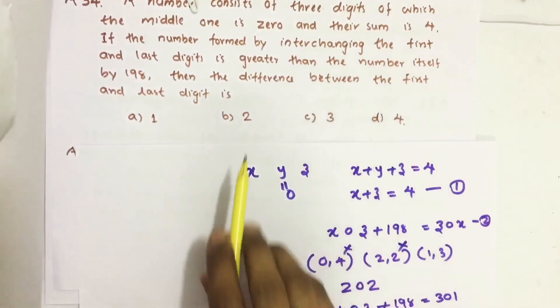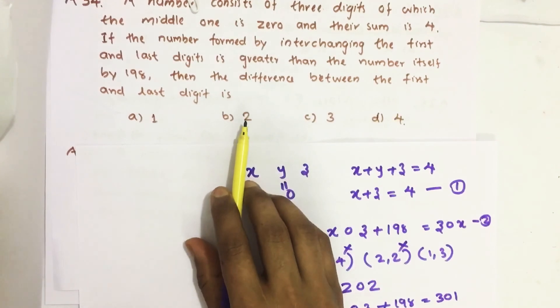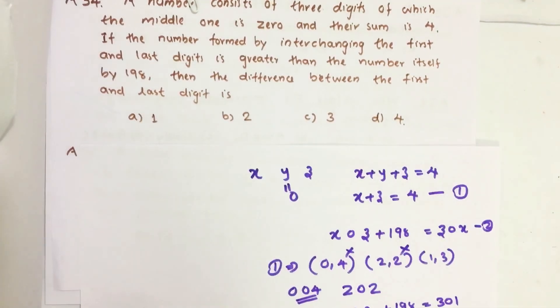Our answer is the difference between first and last number is 2. If you have any suggestions, please do comment. Don't forget to like, share and subscribe our channel. Keep supporting and loving us. Jai Hind.